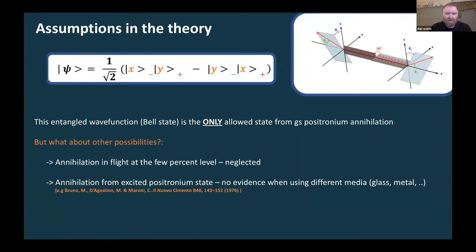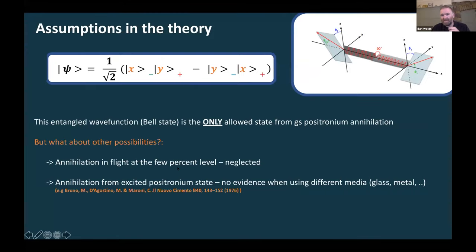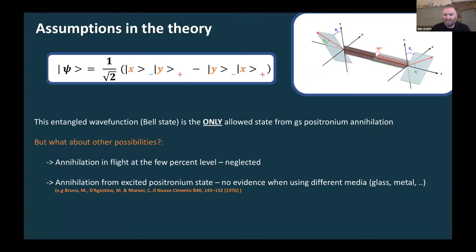Before going on, I'll discuss assumptions in the theory. We have this single Bell state from the annihilation in the ground state. Annihilation in flight is at the few percent level and we neglect it, as done in all previous works. You might wonder whether positronium annihilation could occur in a short-lived excited state. This was investigated by looking at thermalizing positrons in different media — glasses, metals — where such effects were predicted to give differences, but no statistical difference with experimental data was seen, so this is also neglected.